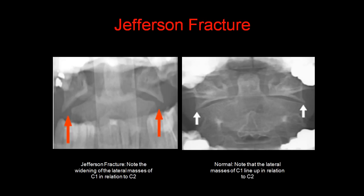Here's an example of a Jefferson fracture. Note that there is widening of the lateral masses of C1 in relation to C2 on the odontoid view. On the right, note the normal relationship of the lateral masses of C1 in relation to C2.